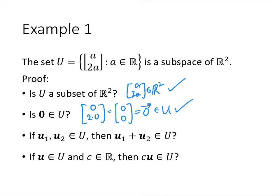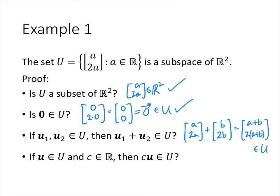If we have two of these vectors and add them together, do we get another vector in U? Yes — we take (a, 2a) and add it to (b, 2b), and we get (a+b, 2(a+b)), which is exactly what elements of U look like. Finally, if we take a vector from U and multiply by a scalar c, we get c·(a, 2a) = (ca, 2(ca)), which is also in U. So this set is a subspace.